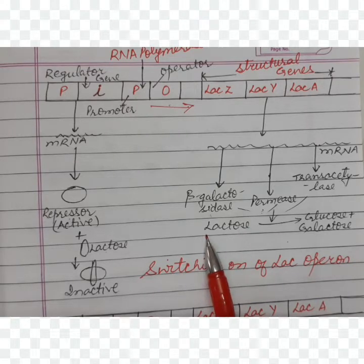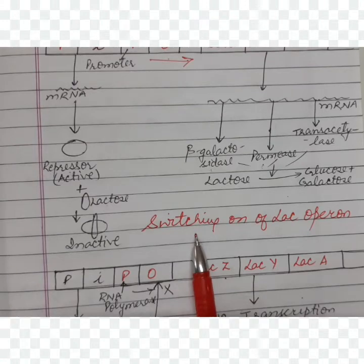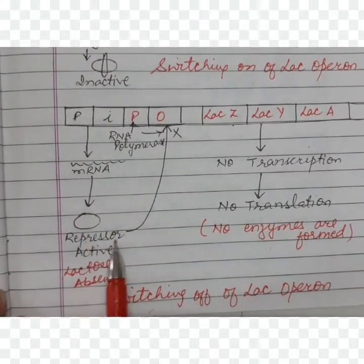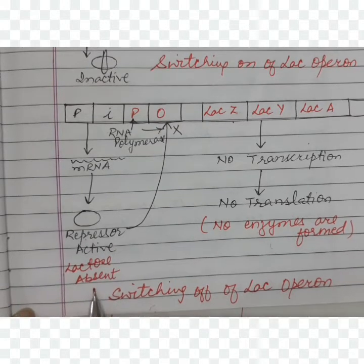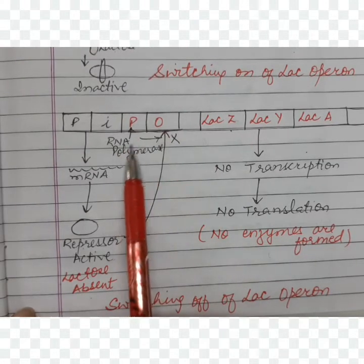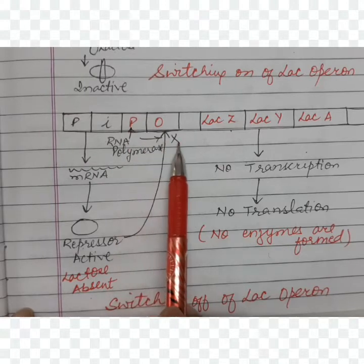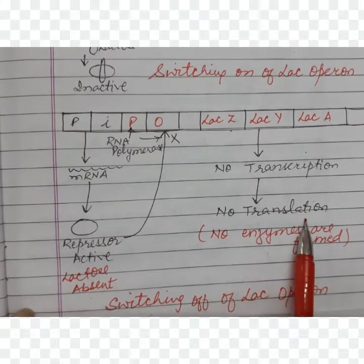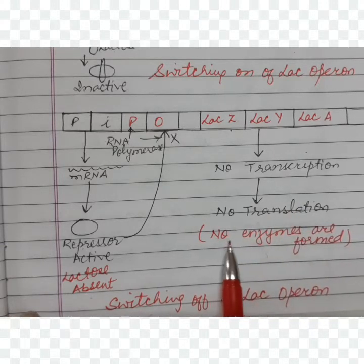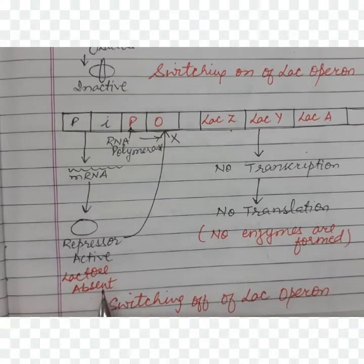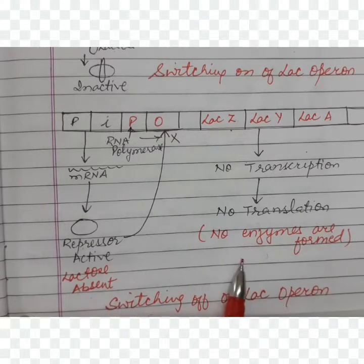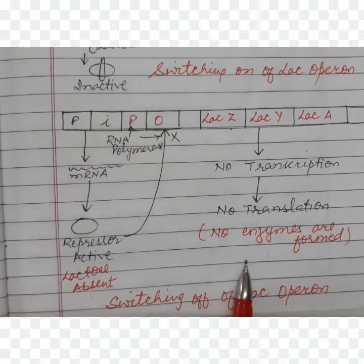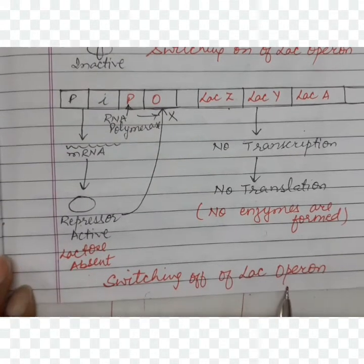When lactose is provided to the bacterial cells from outside, this operon is switched on. But when the lactose is consumed, the regulator gene produces a repressor which is now active, because lactose is absent. It binds to the operator gene, and RNA polymerase which binds to the promoter gene cannot go further. So the structural genes cannot be transcribed, no translation occurs, and no enzymes are formed — because lactose is no longer needed in the cells. This is the switching off of the lac operon.